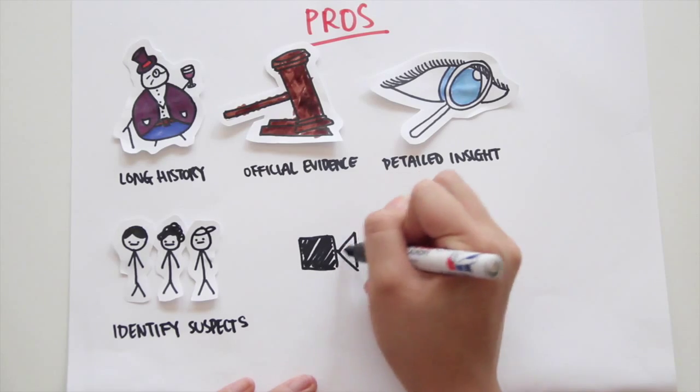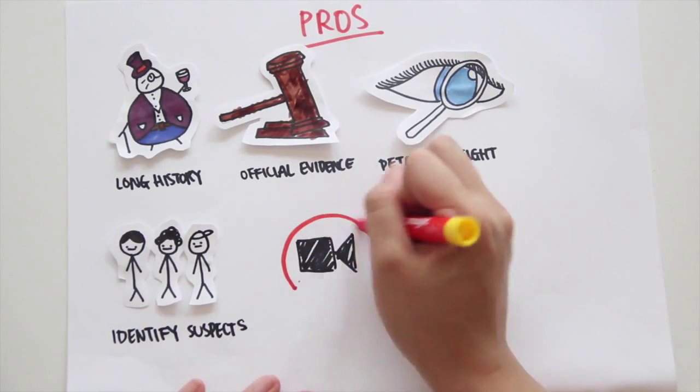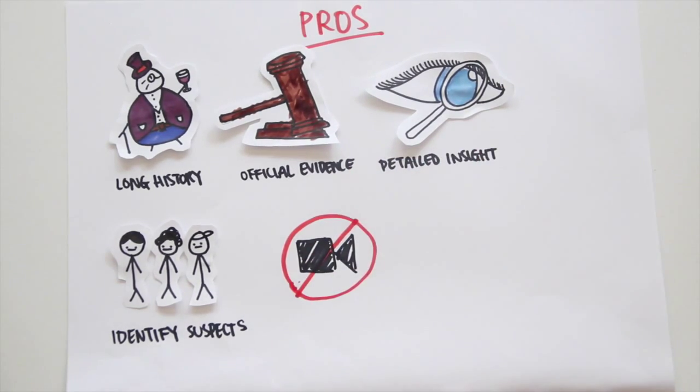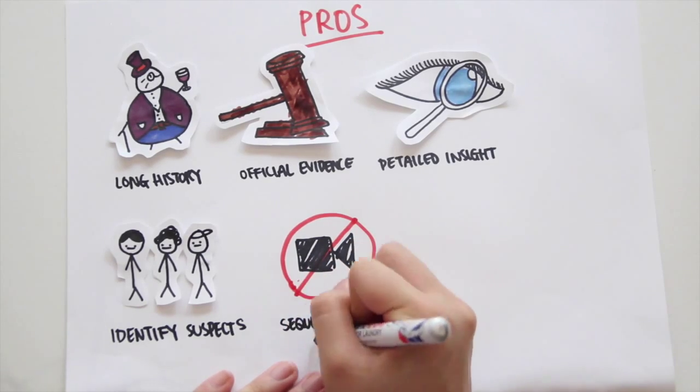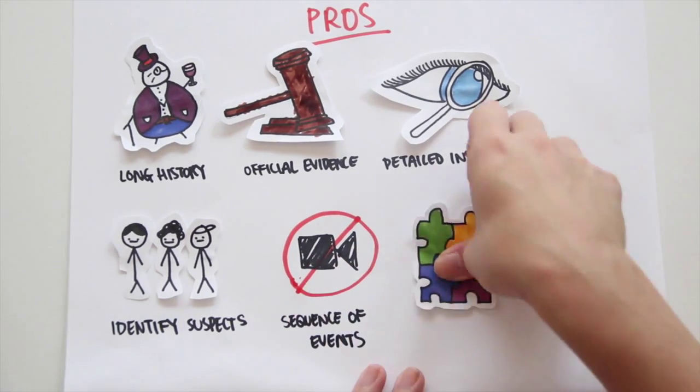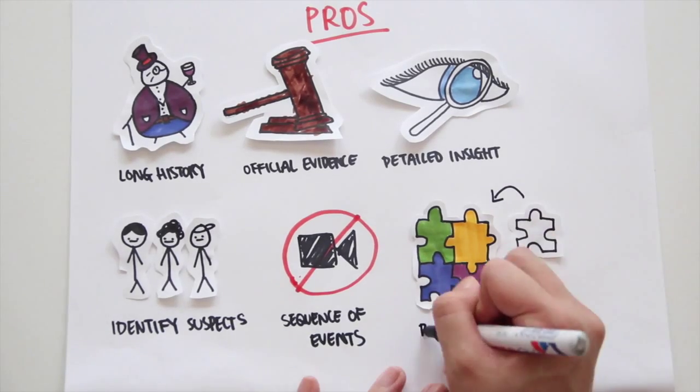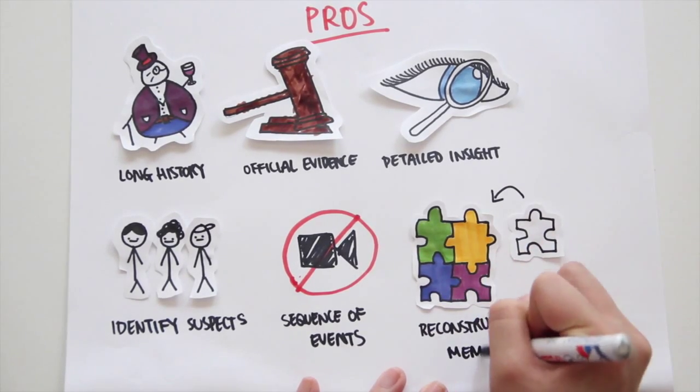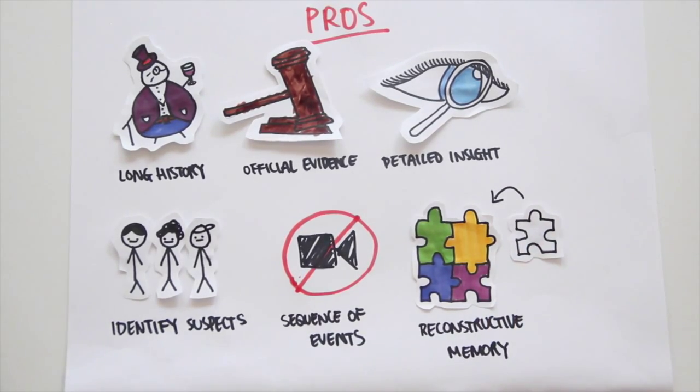Eyewitness testimonies are especially helpful when there is no recording or video camera evidence as it can construct a sequence of events. According to the theory of reconstructive memory, people do tend to remember the general occurrences of the event which can be useful in court.